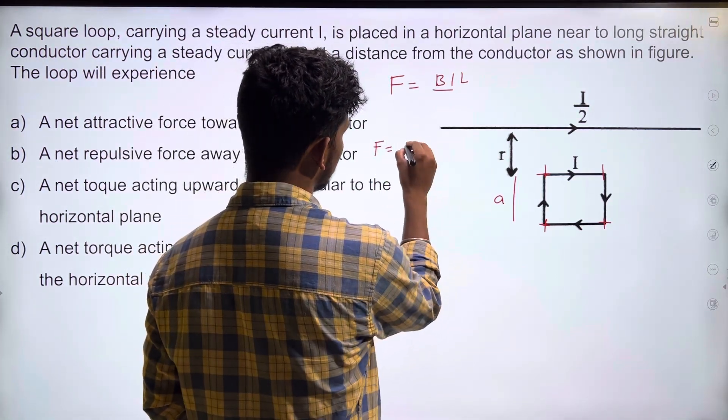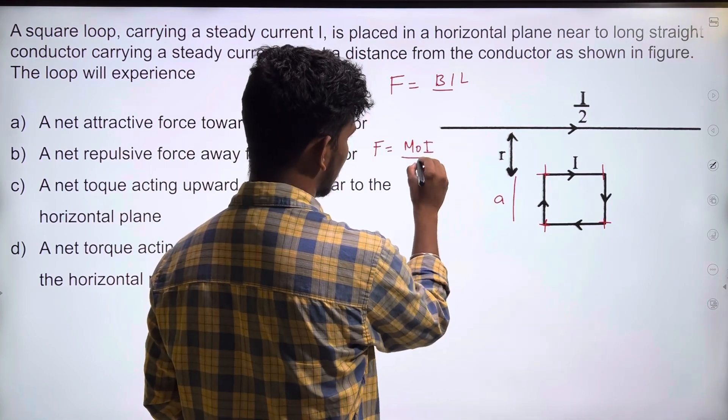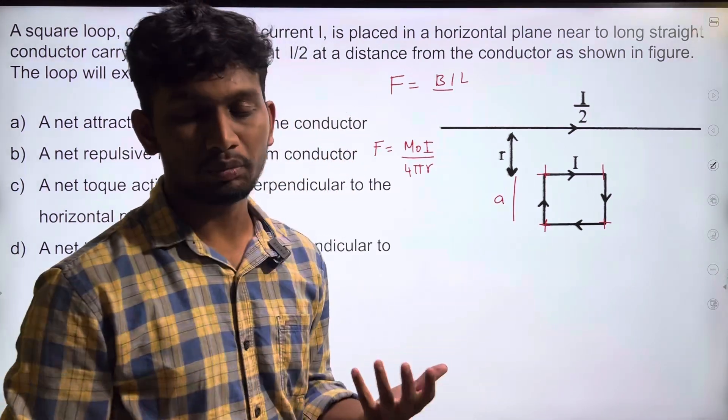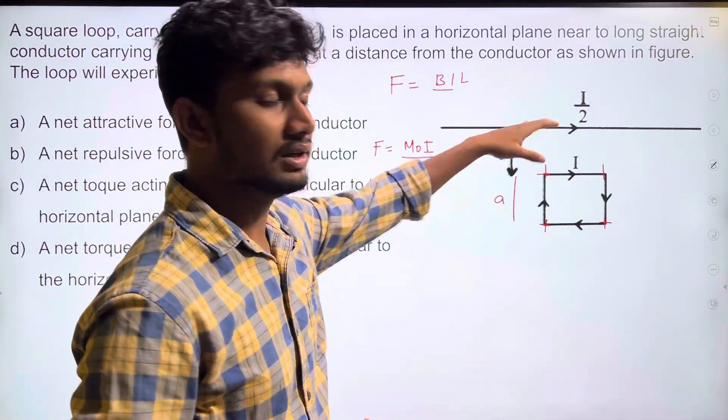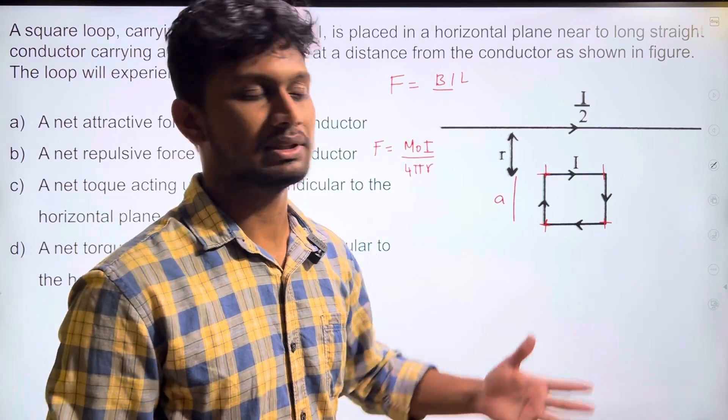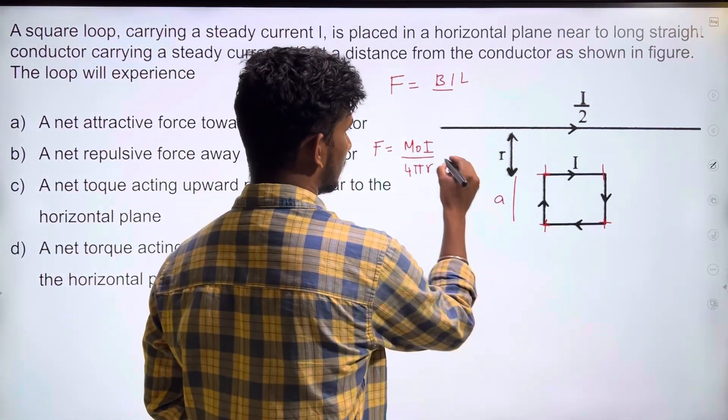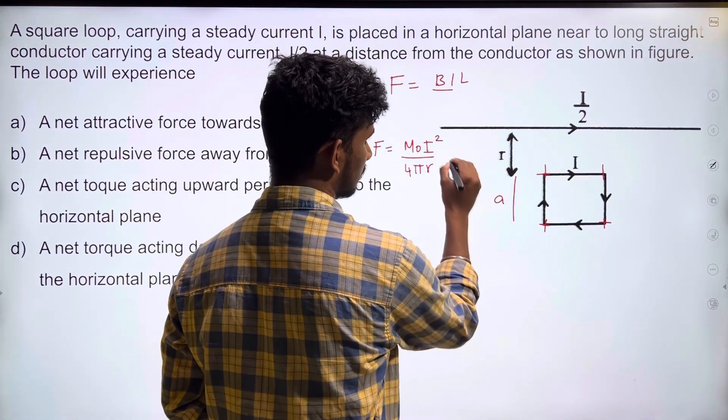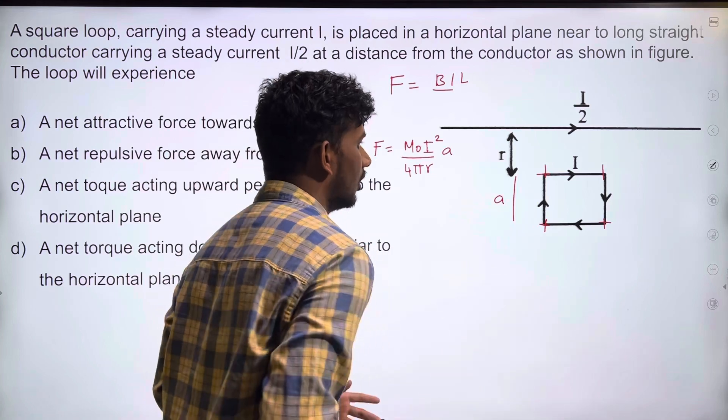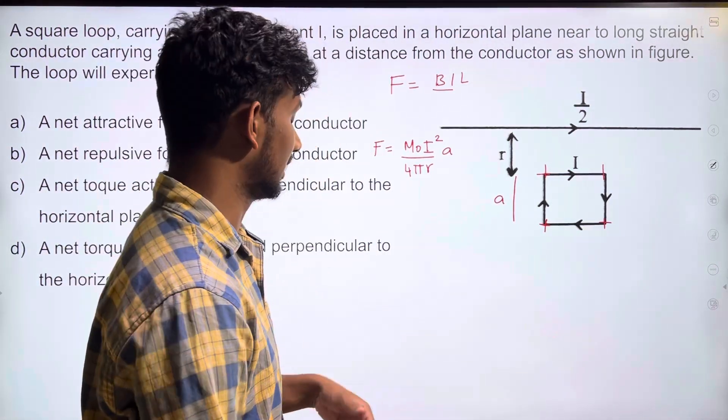The magnetic field due to the long straight conductor carrying current I/2 is B = μ₀I/(2πr). So the force will be F = (μ₀I²a)/(4πr), where a is the side length.